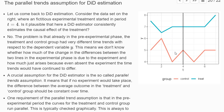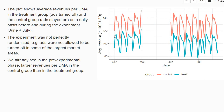The parallel trends assumption is a very important assumption. Looking at our original dataset, at least by eyesight it looks quite good — the average revenues in the treatment and control group seem to move nicely parallel to each other in the pre-experimental period. One would be relatively convinced, at least from this graph, that the parallel trends assumption may be well satisfied. In the example with the fictitious numbers shown on the other slides, this is less convincing.